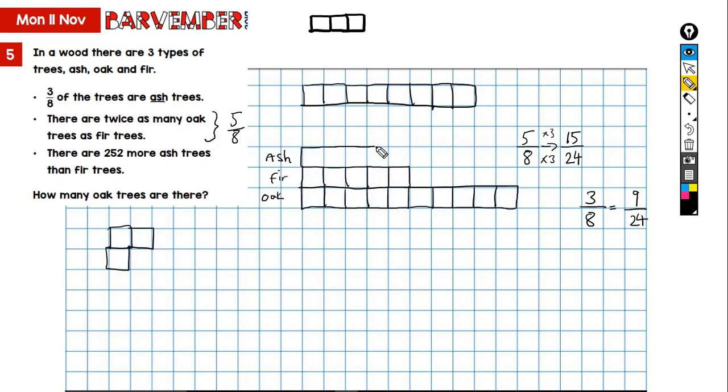So one, two, three, four, five, six, seven, eight, nine. All right, so and then I can put in the piece of information that I was given. Okay, that the difference, okay, between the ash and the fir, all right, is 252. Okay, so this, I'll just do it up here.